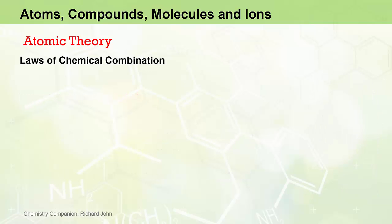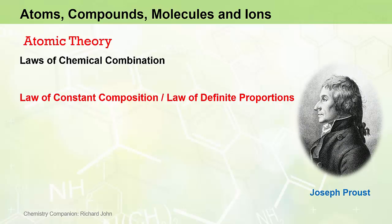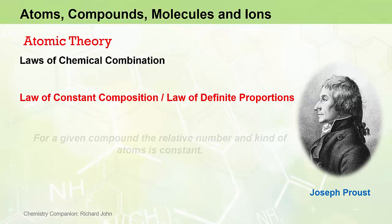Another law of chemical combination is the law of constant composition, otherwise known as the law of definite proportions, and it was first published by Joseph Proust in 1799. The law of constant composition states that for a given compound, the relative number and kind of atoms is constant. In other words, compounds consist of different types of atoms combined in the same fixed proportion by mass.